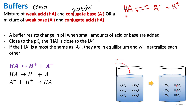Buffers can either be a combination of weak acid and conjugate base, or of weak base and conjugate acid. Most commonly in biochemistry, we see weak acid and conjugate base. A buffer is a mixture of weak acid and conjugate base that resists change in pH when small amounts of acid or base are added. But how does a buffer resist change in pH?